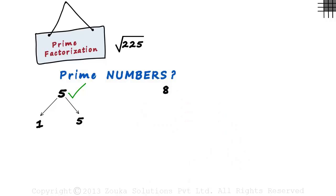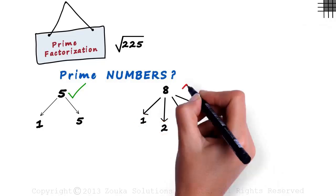Let's consider 8. 8 is divisible by 1, 2, 4 and 8. Apart from 1 and itself, it's also divisible by 2 and 4. Hence, it's not a prime number.